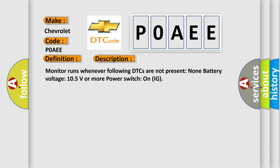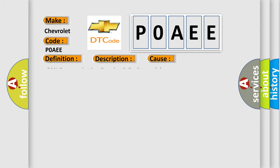Monitor runs whenever following DTCs are not present: None. Battery voltage 10.5 volts or more, power switch on IG. This diagnostic error occurs most often in these cases: CAN communication bus circuit faulty module.